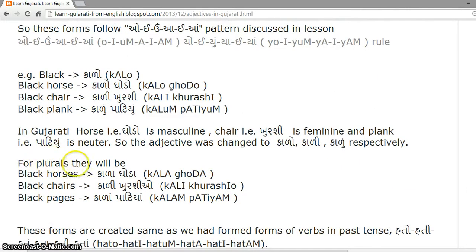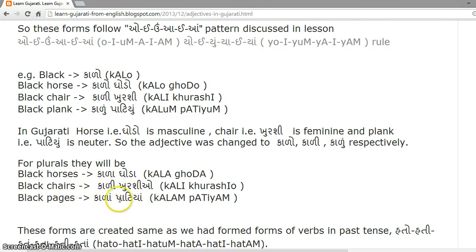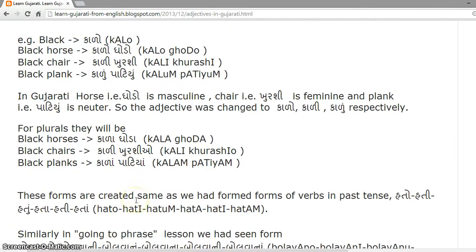For plurals, Black Horses is Kaala-Ghoda, Black Chairs is Kaali-Kurshiyo, and Black Planks is Kaala-Patiyun. So the forms changed as Kaala, Kaali, and Kaala.